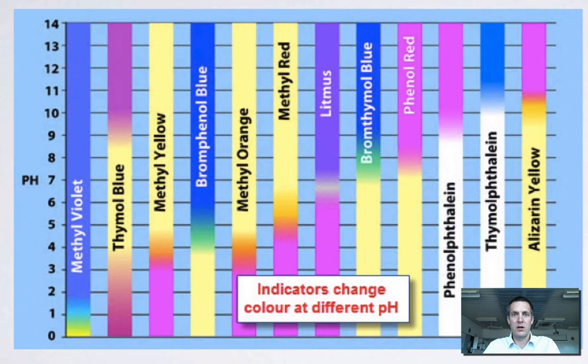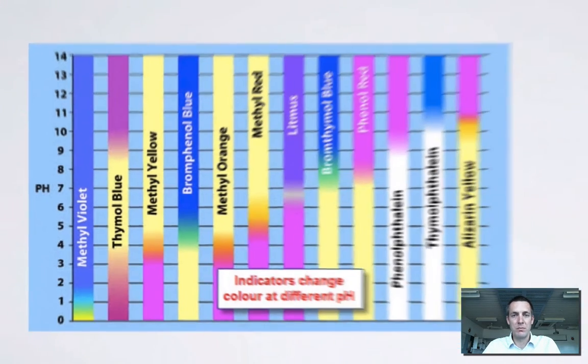Here's a quite a large range of different indicators and it shows you their different colors at different pHs. It's important to realize that no recall knowledge of this is expected. This is just to show you that there's quite a lot of different indicators out there and they have all different colors and they change color at all different pHs.